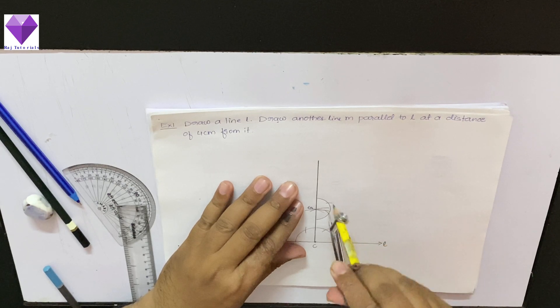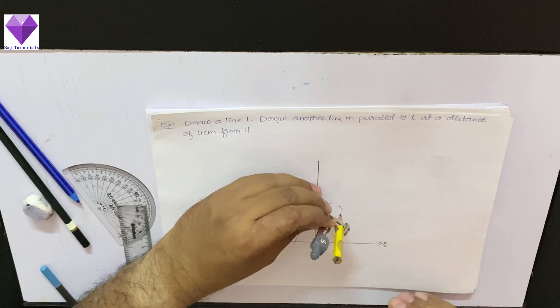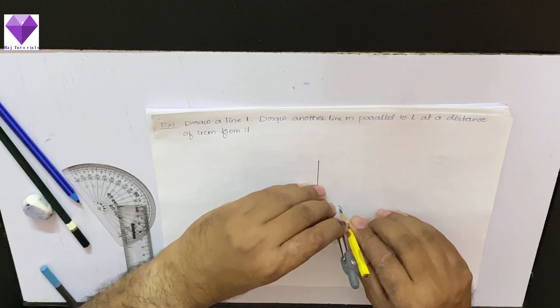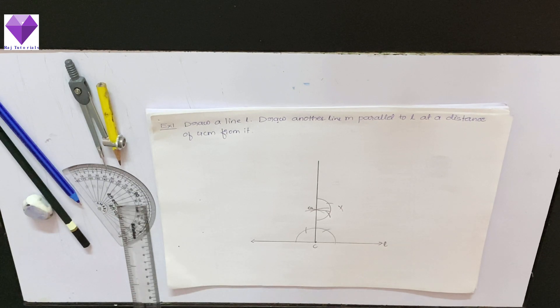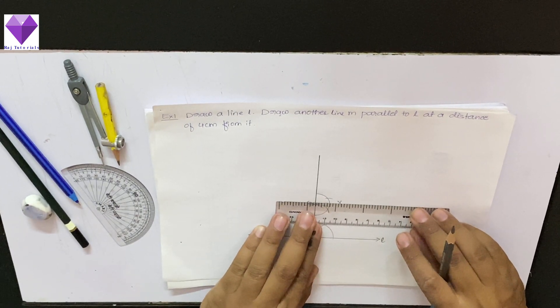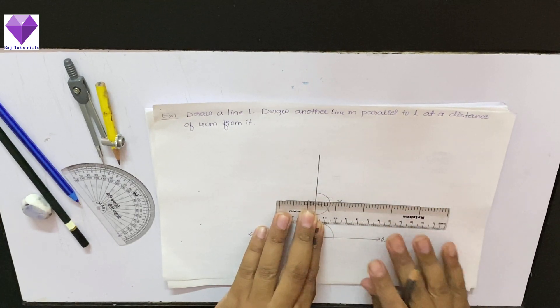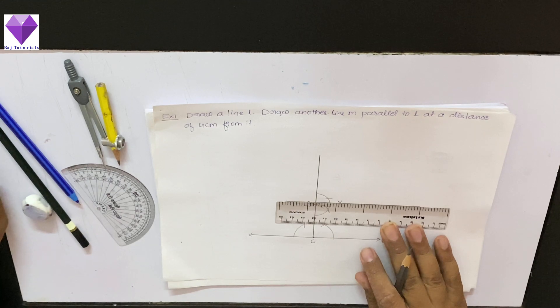Now with 60 I am drawing one arc, with 120 I am drawing one arc. So I have got a point. Now I will join G and this point to get the required line segment. So this is my required line. Thank you.